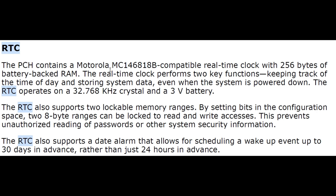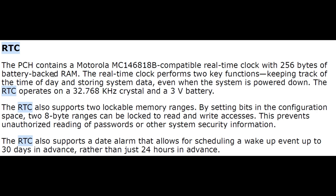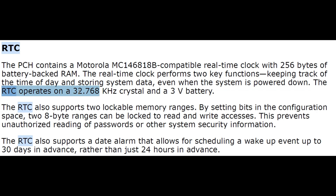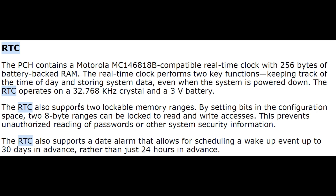RTC in PCH: the PCH contains a Motorola MC146818B compatible real-time clock with 256 bytes of battery-backed RAM. It has a Motorola IC with battery-backed RAM — 256 bytes. The real-time clock performs two key functions: keeping track of the time of day, and storing system data even when the system is powered down. The RTC operates on a 32.768 kHz crystal and a 3-volt battery. The 3-volt battery is very important; it is mandatory to operate this Motorola IC.